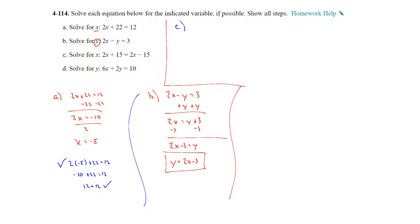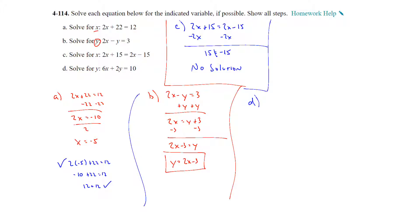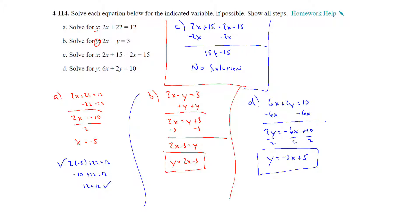Part c: Solve for x in 2x plus 15 equals 2x minus 15. Subtracting 2x from both sides cancels the variable on both sides, leaving 15 equals negative 15, which is not true — no solution. Part d: Solve for y. Subtract 6x from both sides to get 2y equals negative 6x plus 10, then divide everything by 2, giving y equals negative 3x plus 5.